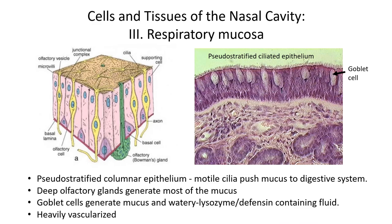Here's a closer view of the receptive area showing the olfactory receptor-containing cilia embedded within mucus. The mucus in this region is manufactured mainly by olfactory glands, also known as Bowman's glands. In a histological section from another part of the nasal cavity, we can see real cilia attached to pseudostratified epithelium, along with large goblet cells. The goblet cells generate mucus and a watery fluid containing lysozymes — enzymes that attack the peptidoglycan of bacteria — and also defensin, a compound that can punch holes into bacterial membranes. This region is also heavily vascularized.